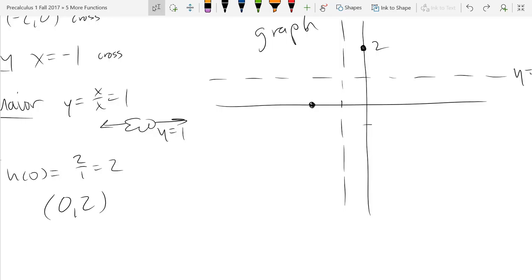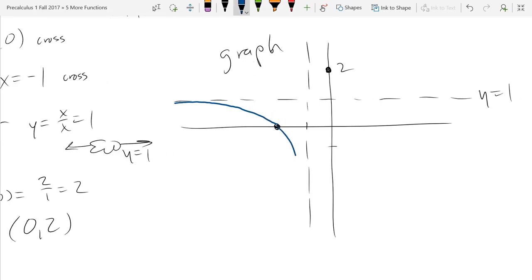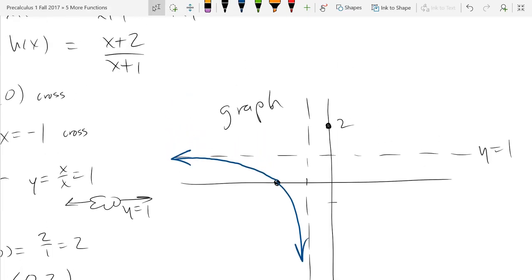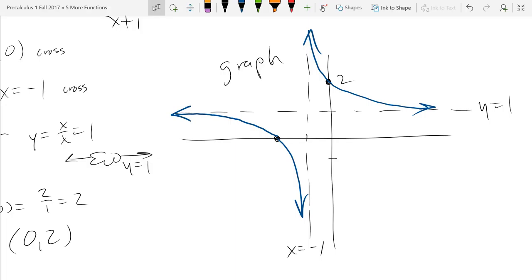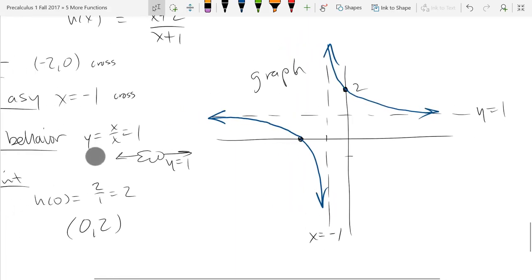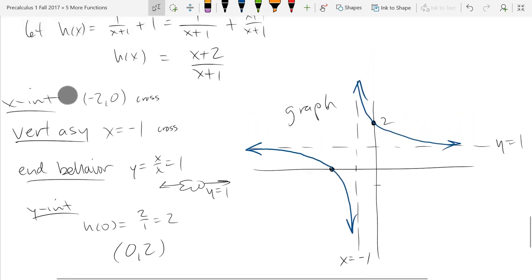Alright. So, do your best to sketch out your graph. So, you can either start... Probably a good place to start is the far left end for end behavior, and then hit that first x-intercept. It's a good place to start. Okay. Okay. Let's keep moving. Okay, questions on the graph.